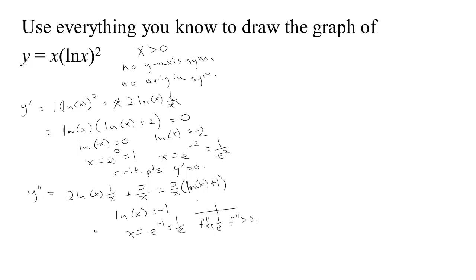We've got quite a bit of information, let's see if we can put that to good use in drawing the graph. Let's start maybe with our critical points. I've got this one critical point at 1, so there's a critical point here at 1, and there's another critical point at 1 over e squared.